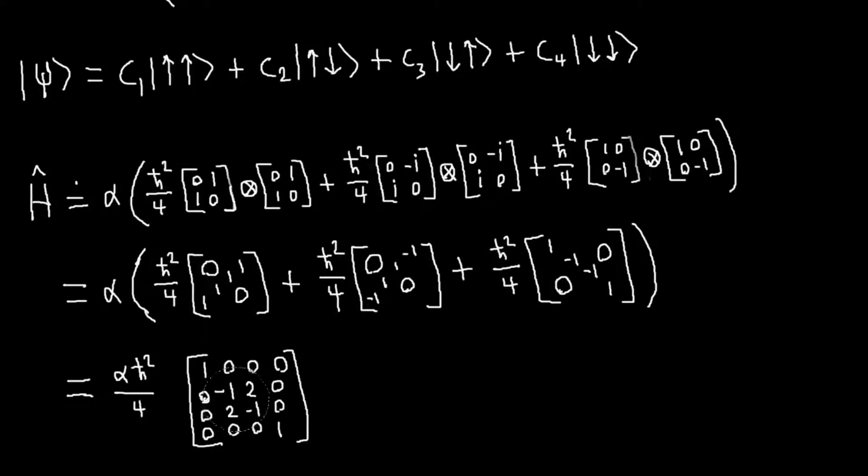So basically all we have to do is work with this submatrix here, this inner block, and find its eigenvectors and eigenvalues. And that will tell us what linear combinations of these two vectors are eigenvectors of our Hamiltonian.